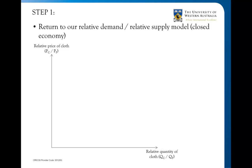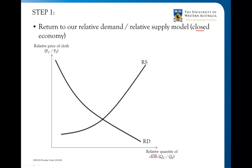The first step is to go back to the relative demand and relative supply model, initially with a closed economy — just looking at this individual country with no trade. On the vertical axis we have the relative price of cloth; on the horizontal axis the relative quantity. The relative aspect is really important here. With the closed economy we have an upward-sloping relative supply curve: as the relative price of cloth increases, producers are more willing to supply more cloth. The relative demand curve is downward-sloping, simply reflecting that as the price of cloth goes down consumers are willing to buy more.